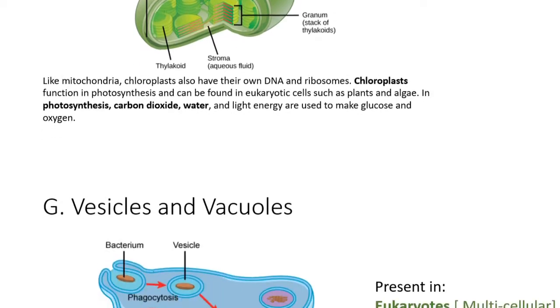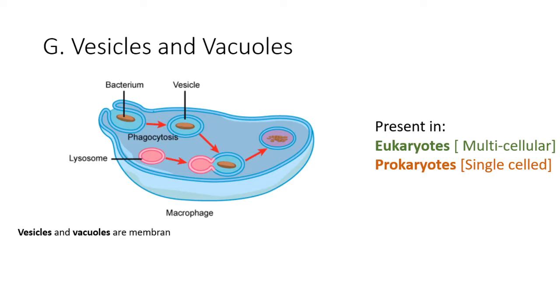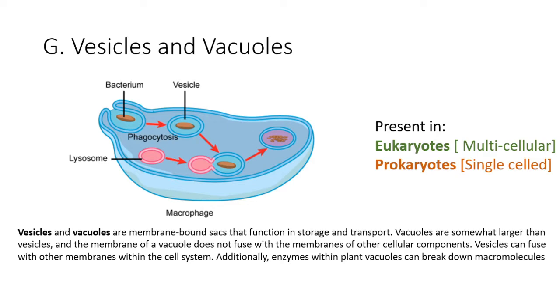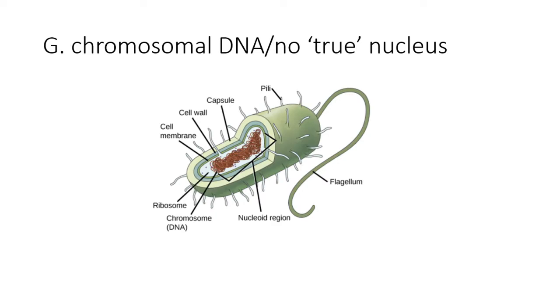Vesicles and vacuoles are membrane-bound sacs that function in storage and transport. Vacuoles are somewhat larger than vesicles, and the membrane of a vacuole does not fuse with the membranes of other cellular components. Vesicles can fuse with other membranes within the cell system. Additionally, enzymes within plant vacuoles can break down macromolecules.